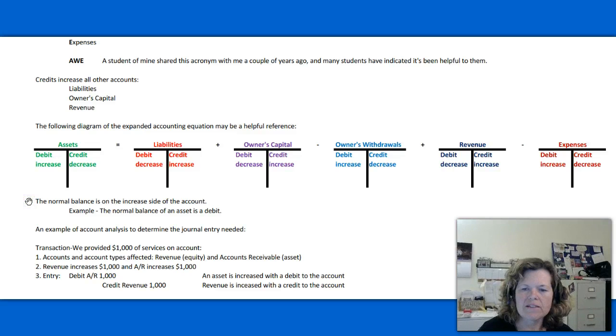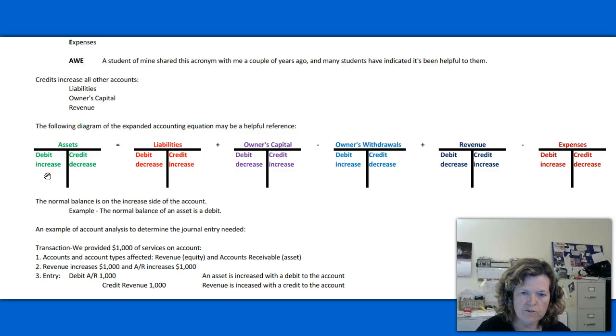So let's talk about the normal balance of an account. You'll read about that in your text also. The normal balance of an account is on the increased side of the account. What I mean by that is the normal balance of an asset is a debit, for example. And let me take this a little further as far as what a normal balance would be. And why do we care? I continue to care when I'm preparing a tax return for a client. I will see, for example, if I see a cash account and I see that it has a credit balance in it, that causes me concern because that means that the account is overdrawn.